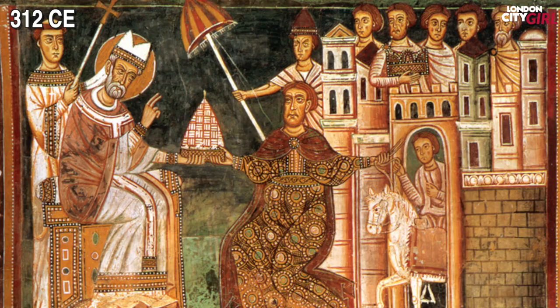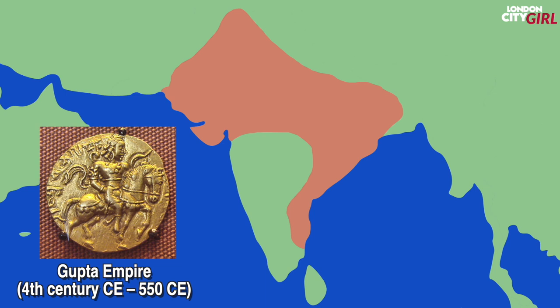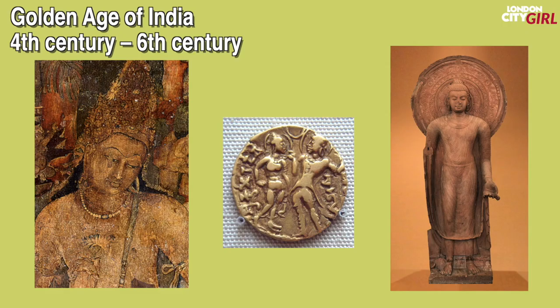In 312 CE the Roman Emperor Constantine converted to Christianity, which would help elevate the religion from a small sect into one of the world's great religions. In 324 CE he also established the city of Constantinople, formerly Byzantium and now modern day Istanbul, as the second capital of the Roman Empire. At its height the Gupta Empire ruled much of the Indian subcontinent and all of northern India. In southern India three prominent Dravidian kingdoms emerged. This period oversaw ancient India's golden age where advances were made in several fields including science, technology and mathematics.